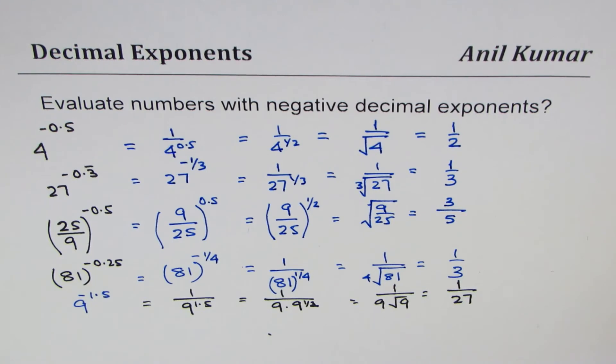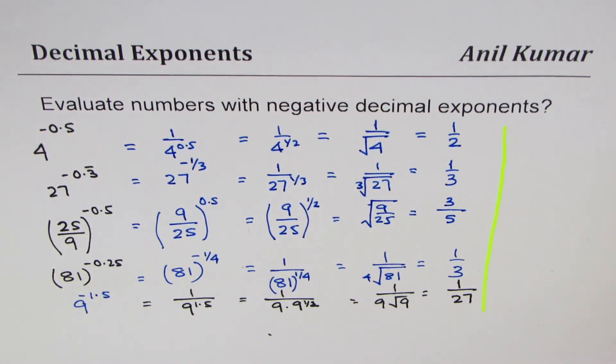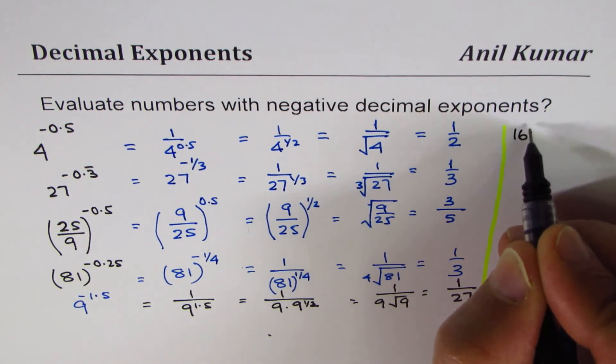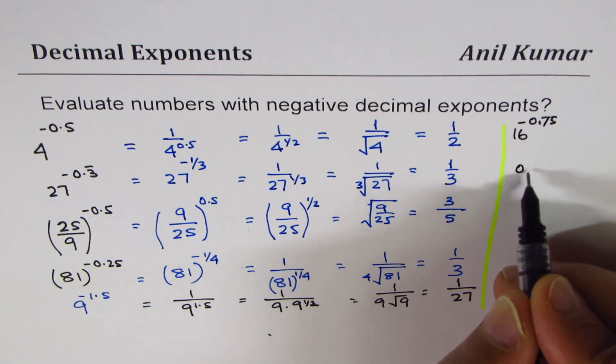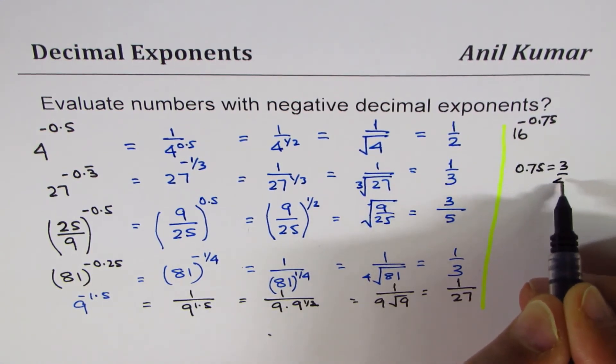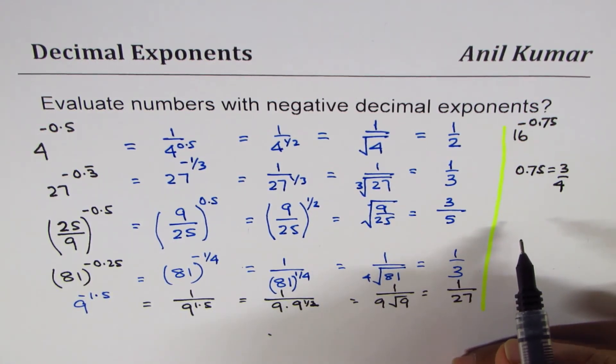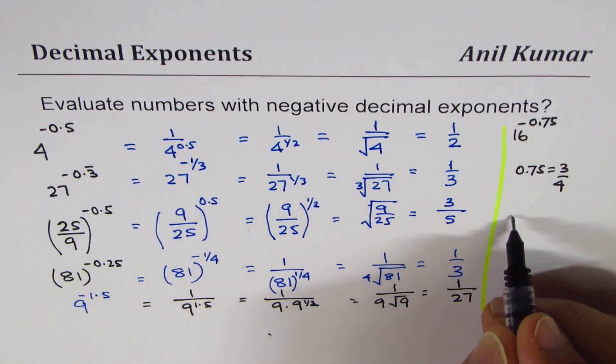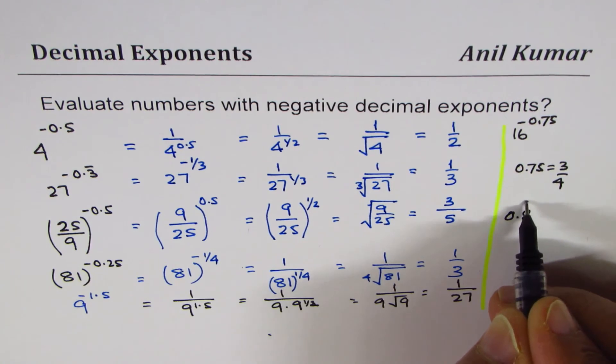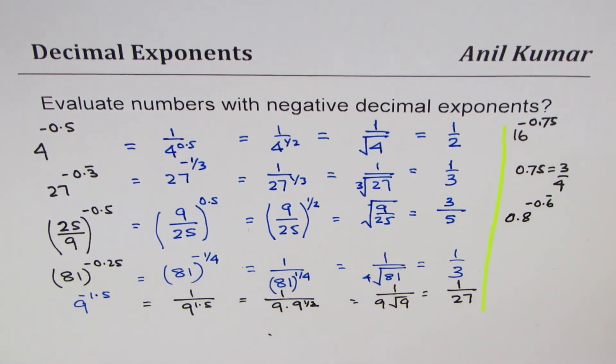So that is how you could actually solve such questions. Now here are a few for you to practice. You can evaluate these numbers. Let's say 16 to the power of minus 0.75. Remember 0.75 is 3 over 4, so that should help you to evaluate that one. We've already done 0.3 recurring, so let's do 0.8 to the power of minus 0.6 recurring. So let this be your practice question.